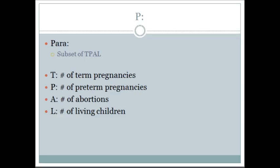Para, on the other hand, is going to be everything else: the number of living children, the number of abortions, preterms, and terms. There are a couple different ways to write this out. The subset of para is TPAL. Para may be broken down into TPAL, or para can simply be para by itself with the number of abortions noted. T is the number of term pregnancies, P is the number of preterm pregnancies, A is abortions, miscarriages, ectopics — any failed pregnancies. And L is the number of living children currently.